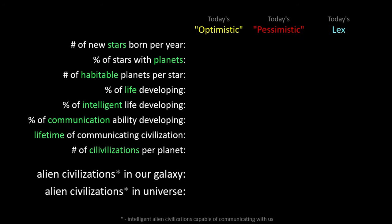I list today's estimates for the optimistic and the pessimistic based on the most recent publications I'm aware of, and today's estimates for me based on how I'm actually feeling today. This estimate probably drastically changes from day to day. I should say that the optimistic and pessimistic estimates don't reflect best and worst case — they simply reflect a reasonable high value and low value for these parameters. The number of new stars born per year: the pessimistic is 1.5 and the optimistic is 3. I tend to side with 3. The variability on this parameter is not very large.